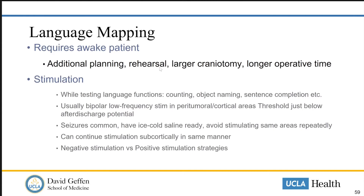When it comes to actually resecting tumors using stimulation mapping information, there are two strategies. One is negative stimulation mapping — if an area of brain is stimulated and doesn't induce a language or other functional deficit, then the theory is that it could be safely resected. A positive stimulation strategy would require identification of the specific region of brain responsible for the function you're looking for — for example, finding the area where stimulation causes a halt in speech production — to make sure that area is kept separate from the resection.